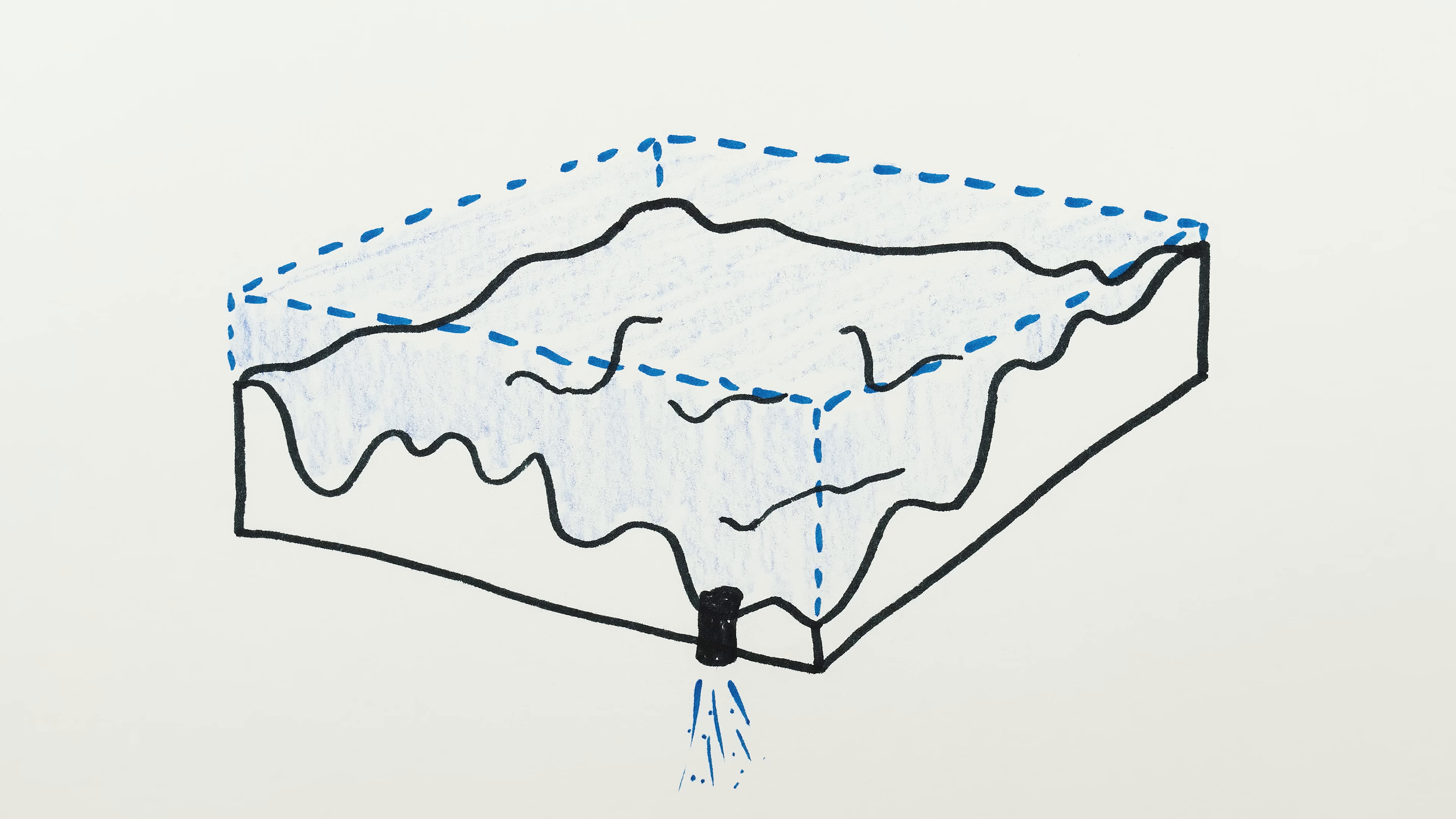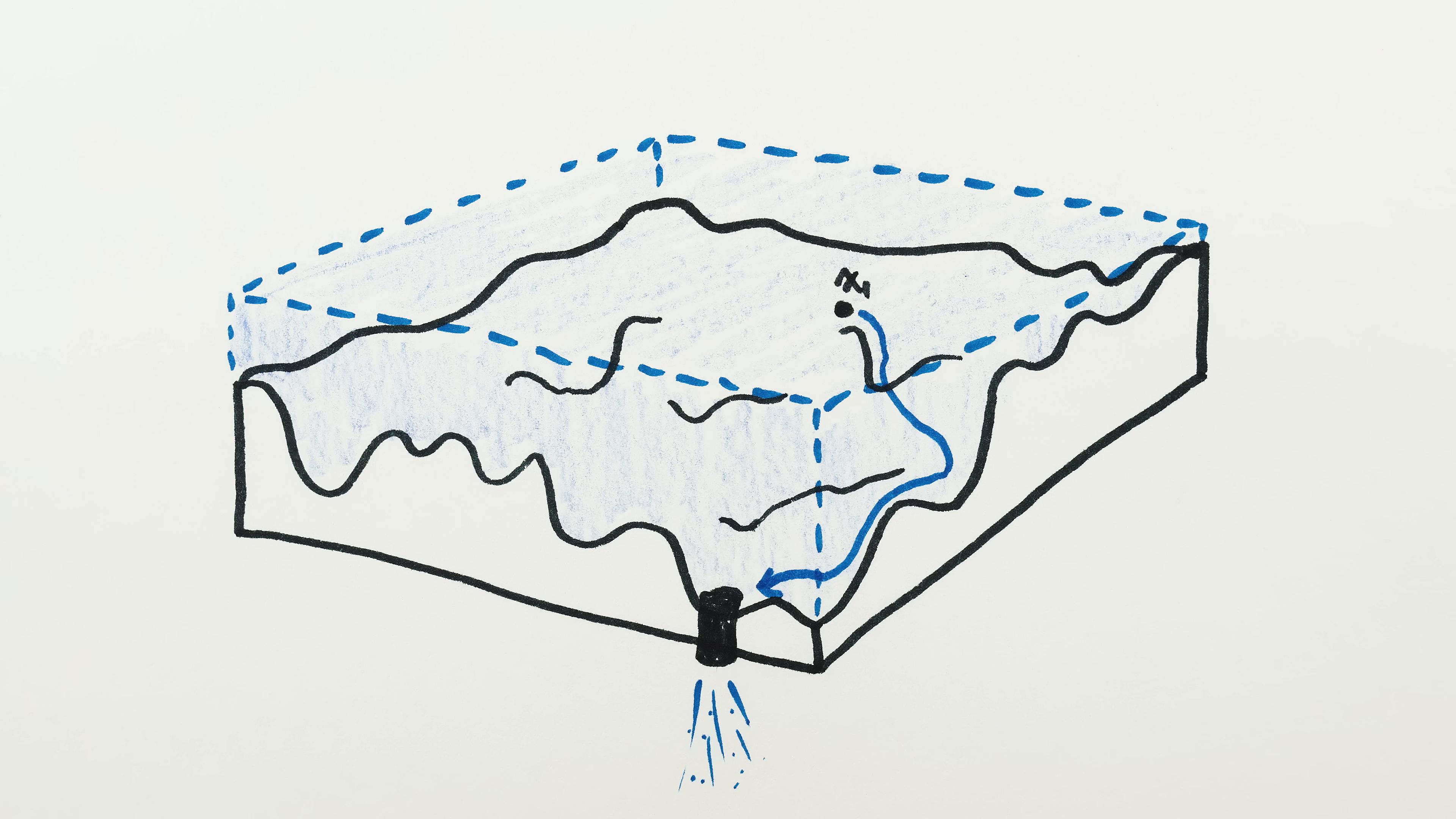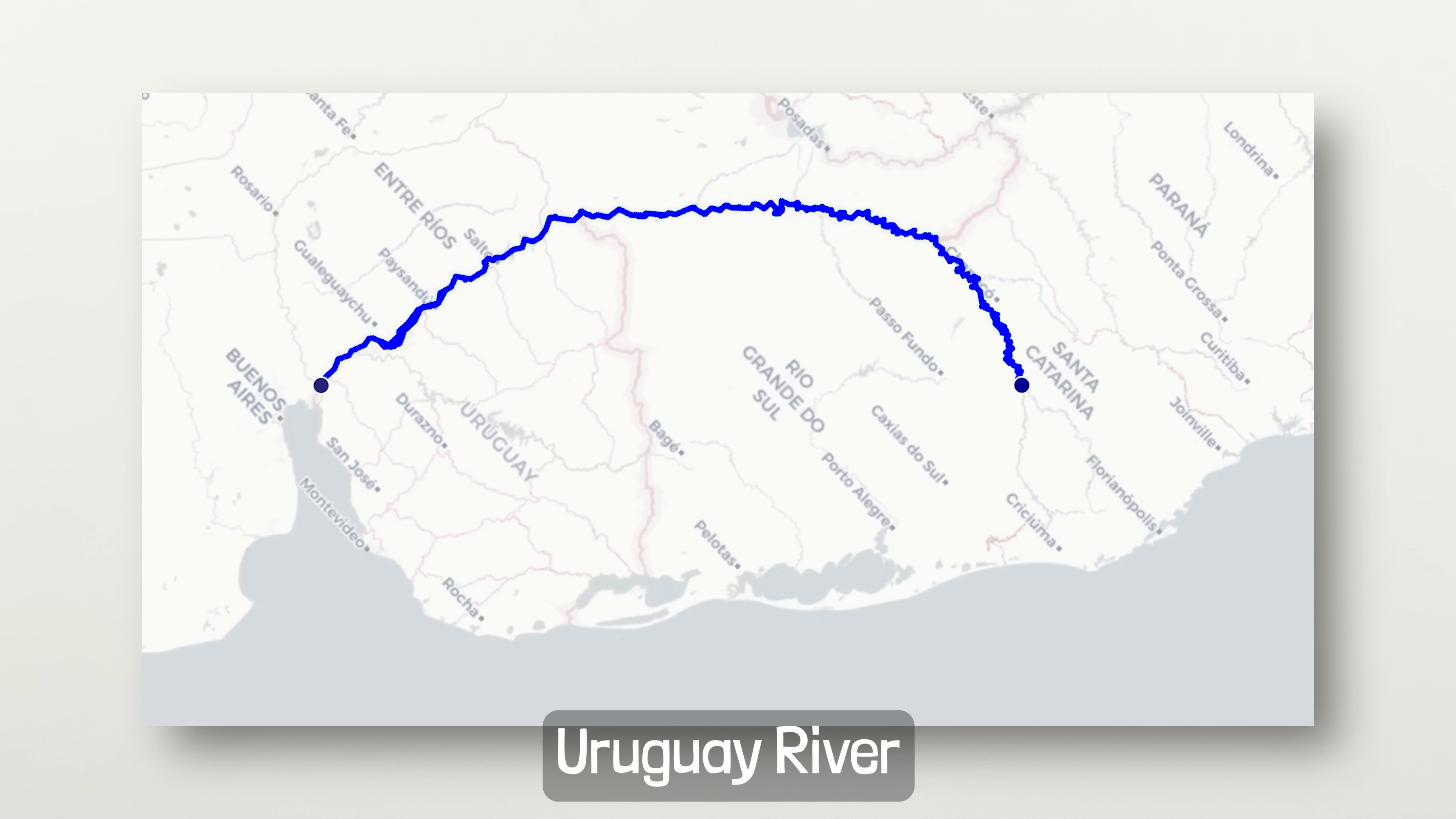But draining real oceans with a drain is more complicated. Whether or not water escapes from a given location depends on whether or not there's a path for water to travel between that location and the drain. And that drainage path could be circuitous and travel far away from both the location and the drain itself – which is the case for lots of real world rivers.